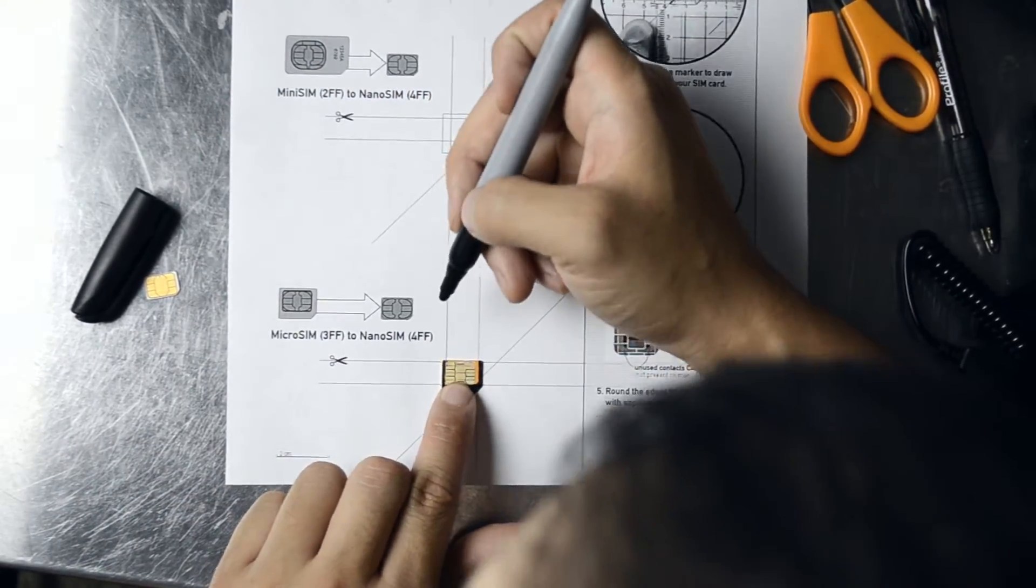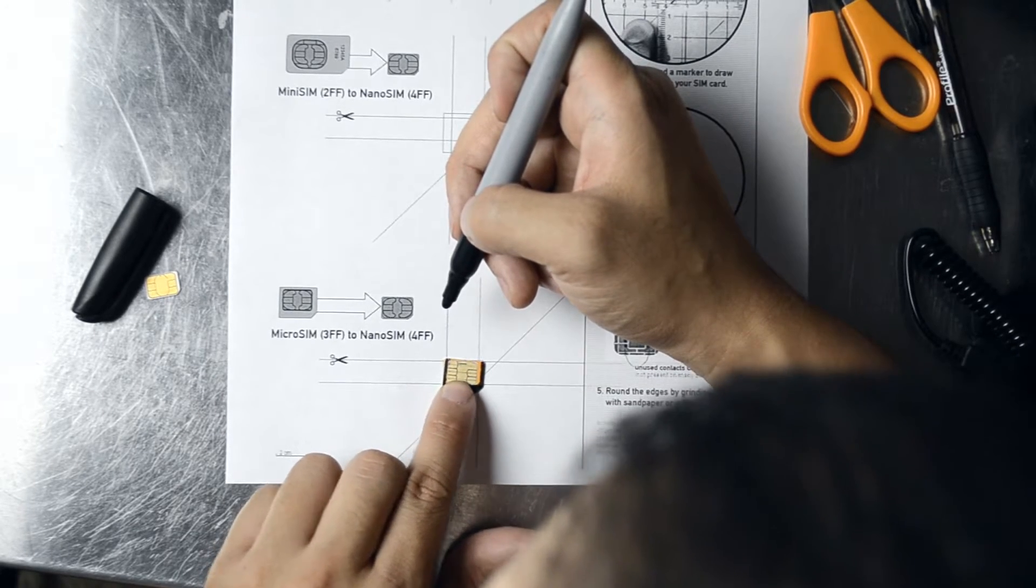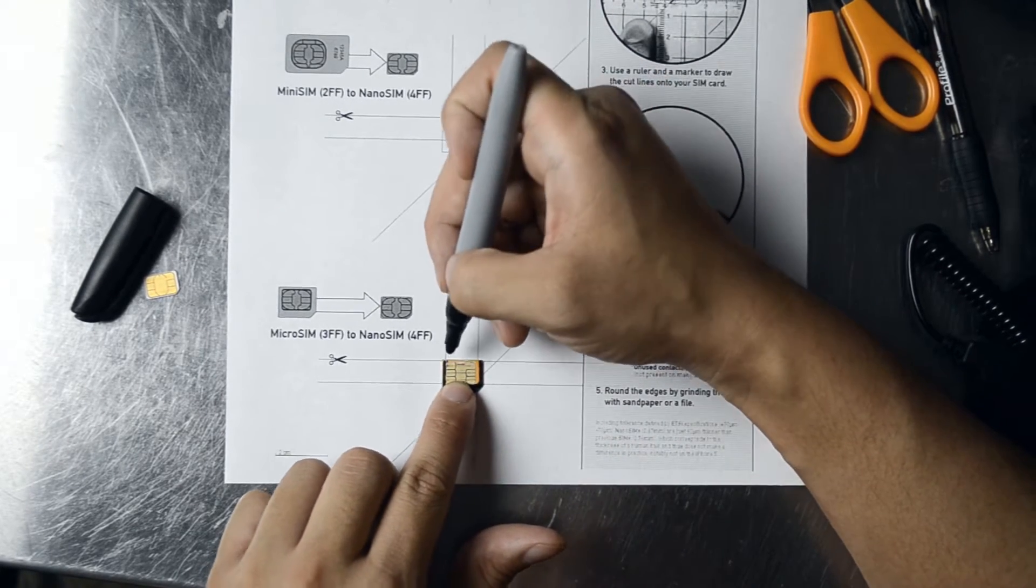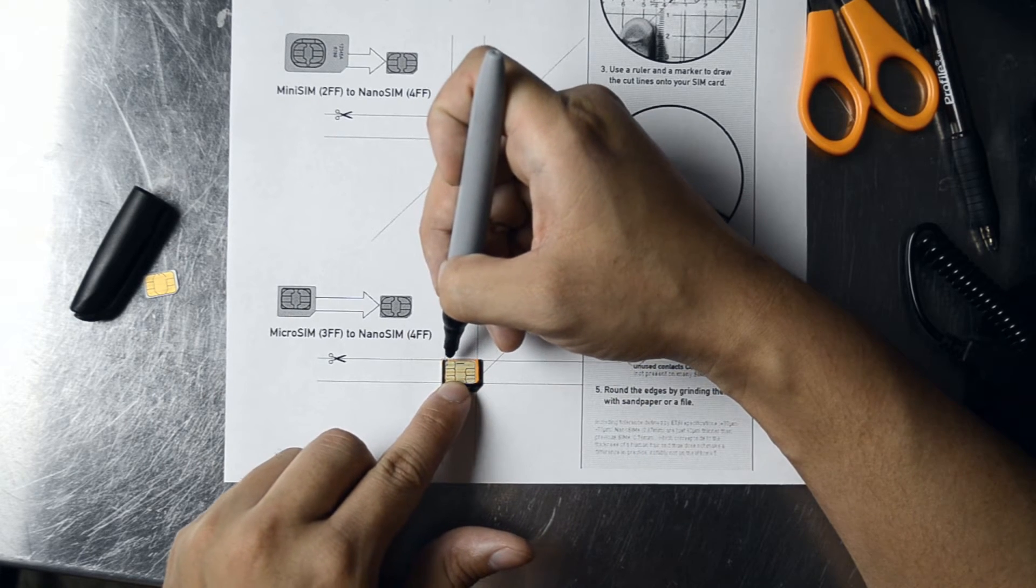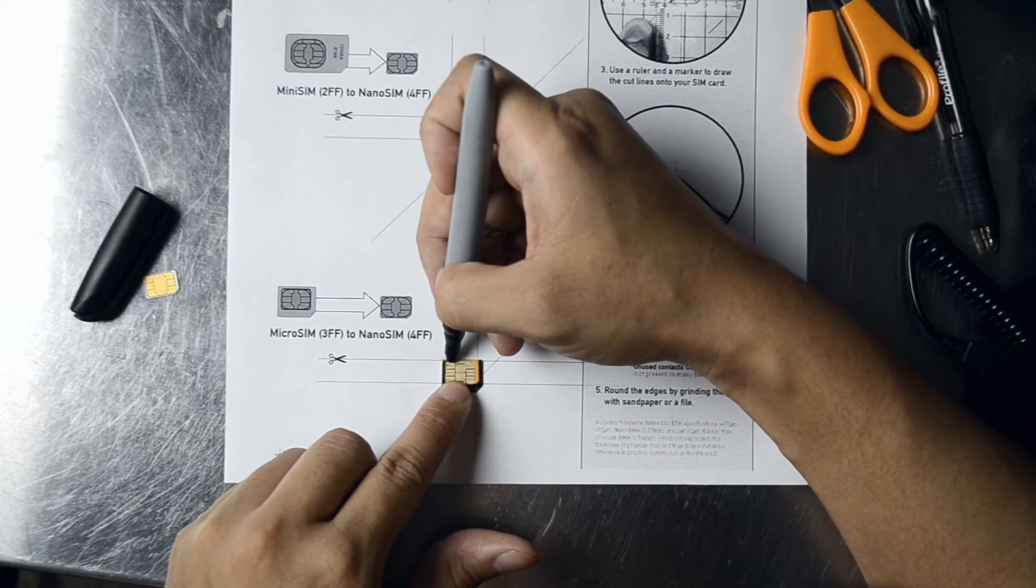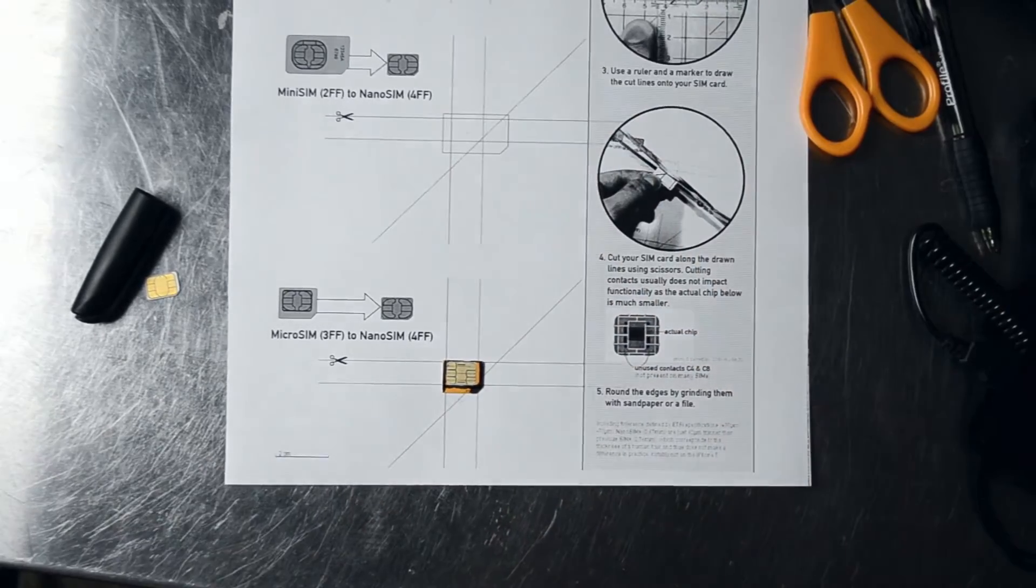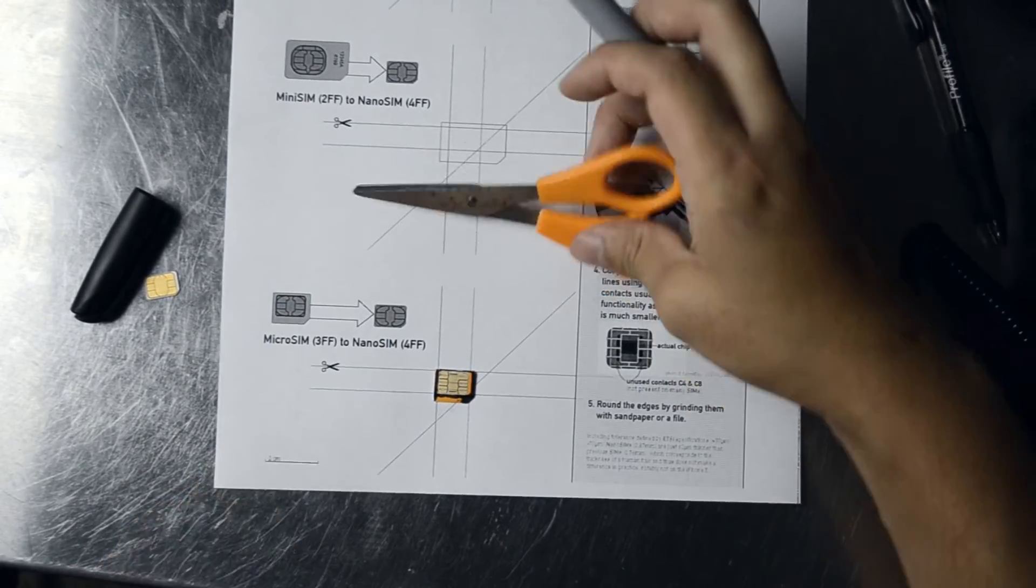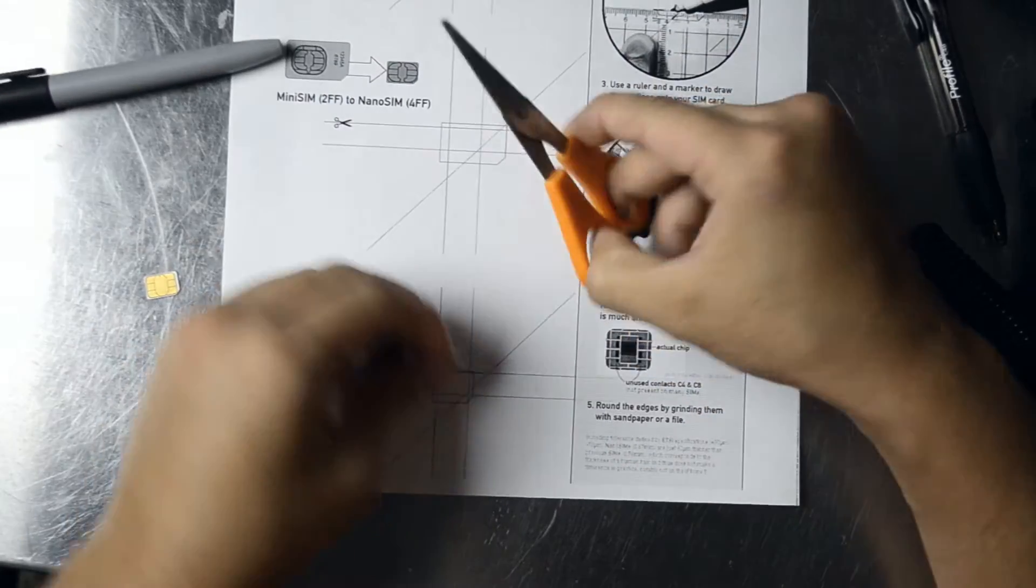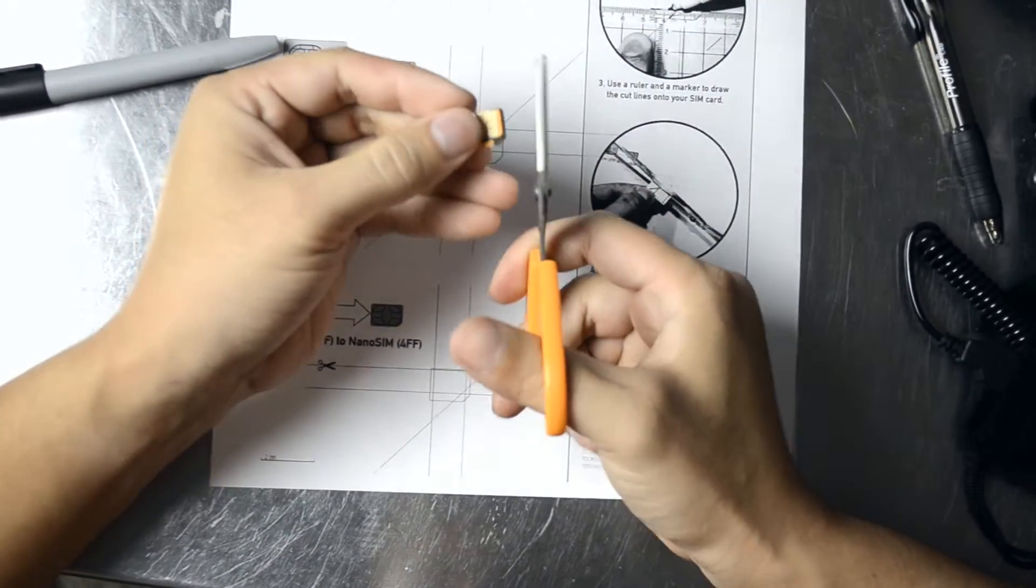And really, the top, you're supposed to cut just a little bit off, pretty much getting it right up against the contacts. I have a really bad pair of scissors here, so I don't know if this will work. Let's start with the easy parts.